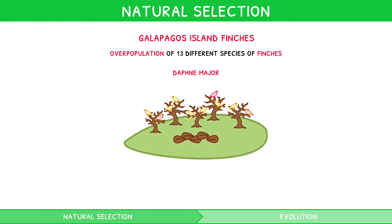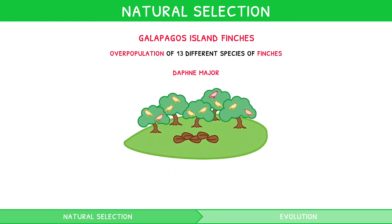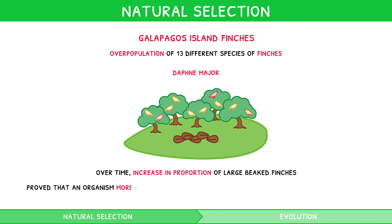Despite a wetter period during an El Niño in 1982-83, the Grants noted that over time there had still been an increase in the proportion of larger-beaked finches. They therefore proved that an organism more adapted to its environment had survived and passed on its genes for adaptation to its offspring — i.e., natural selection.